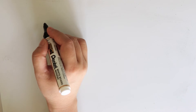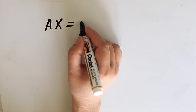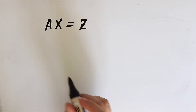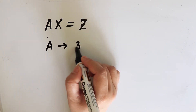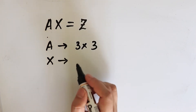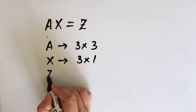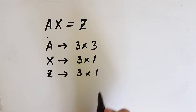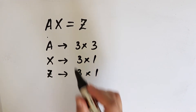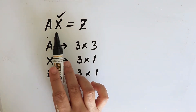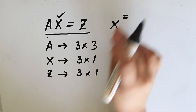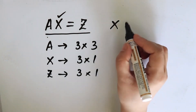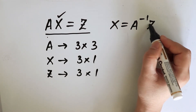The matrix form of the given market model may therefore be expressed as AX is equal to Z. A is a matrix of order 3 by 3, the order of matrix X is 3 by 1, and the order of matrix Z is 3 by 1. To find the value of X, we can rewrite this equation as X is equal to A inverse Z.